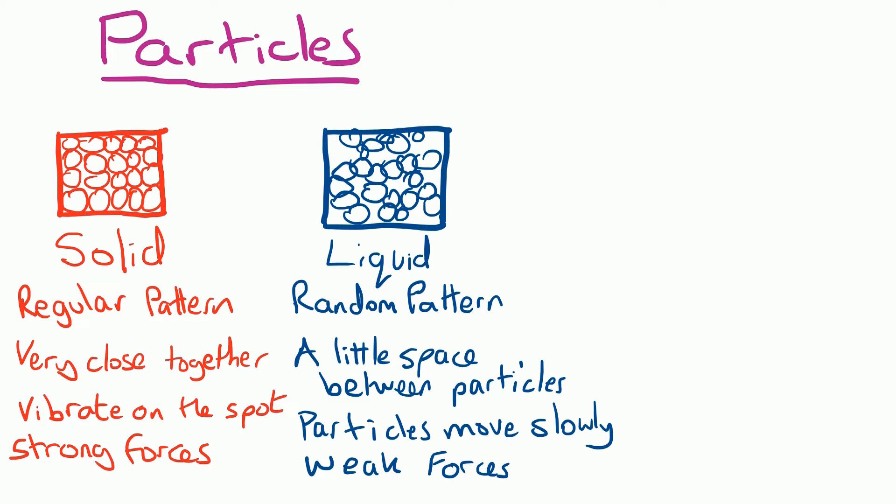The liquid diagram is the most difficult one to draw because you need to show some room between the particles, a few spaces, but as you can see from my diagram most of the particles are still touching. A common mistake of people drawing this diagram is to draw the particles too far apart. Notice how most of the particles are still touching each other. So this time we've got a random pattern of the particles, there's a little space between the particles, now the particles can move around slowly, and there are only weak forces between the particles.